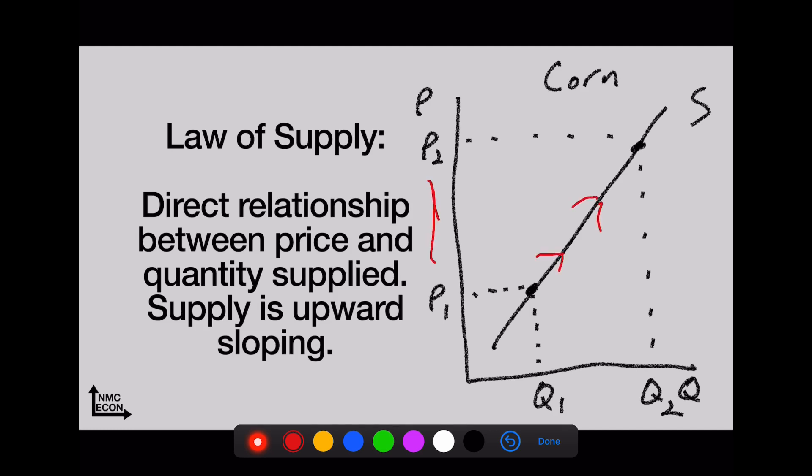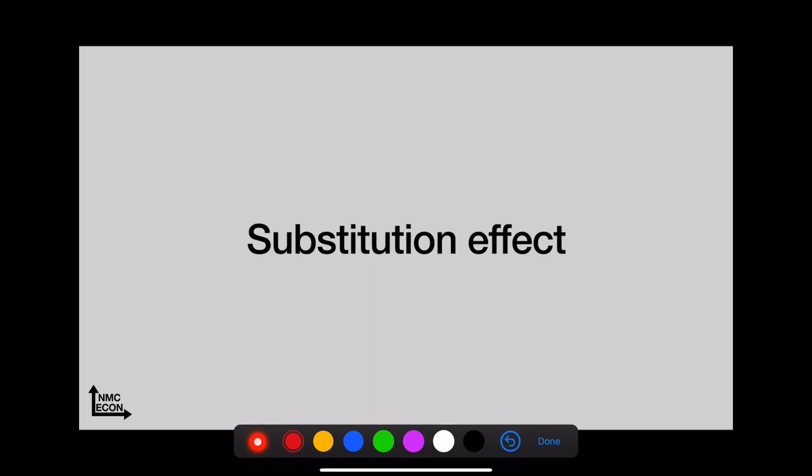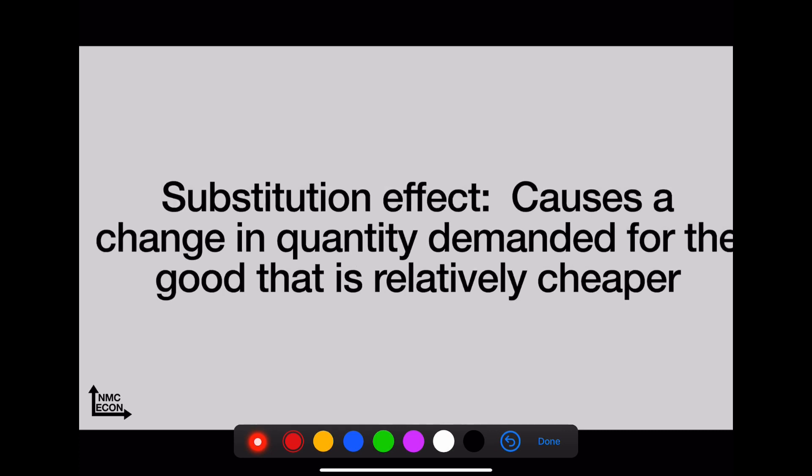The substitution effect—this is caused by a change in quantity demanded for the good that has become relatively cheaper. It's one of the reasons we see downward sloping demand curves.